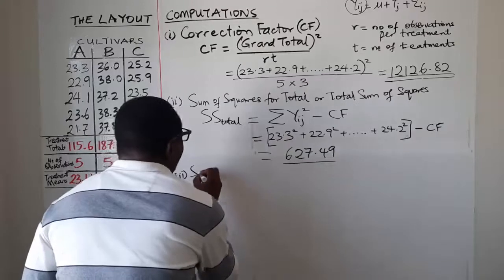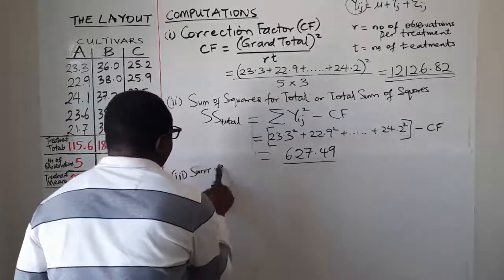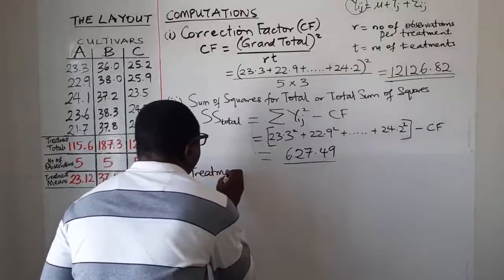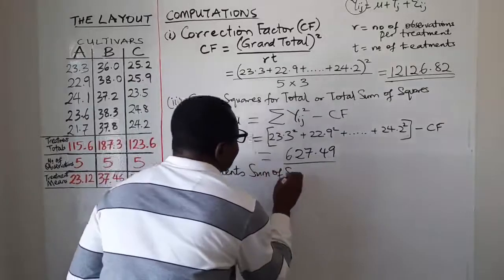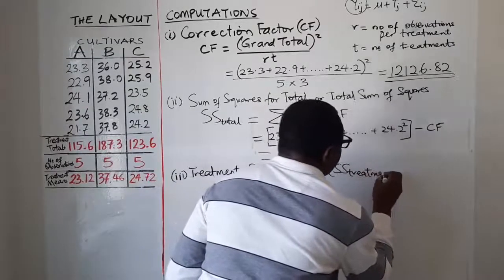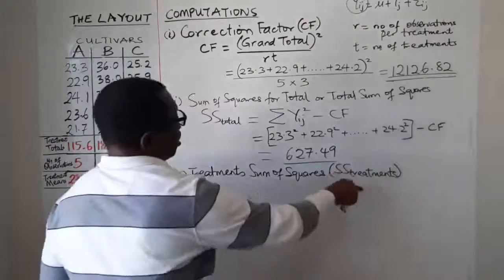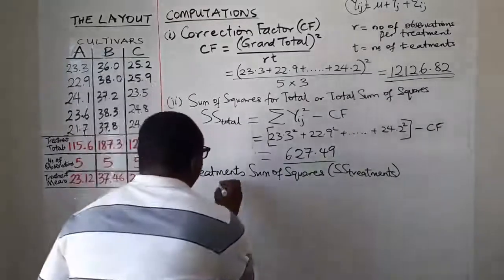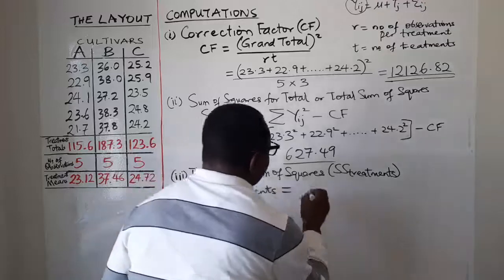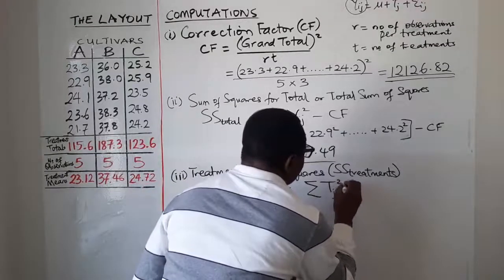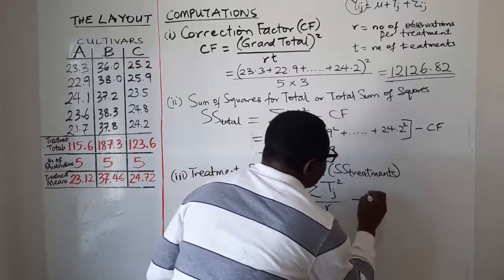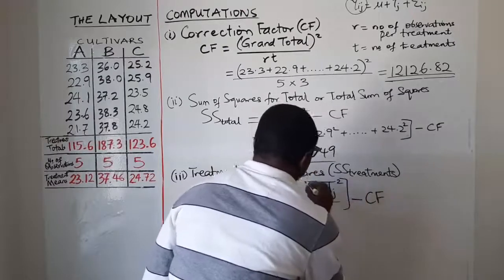The next item — number 3 — is the treatment sum of squares, denoted SS subscript treatments. It is calculated as: the summation of each treatment total squared, all over r, minus CF.